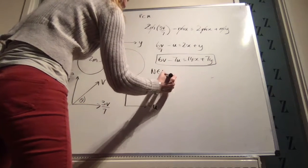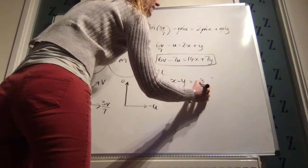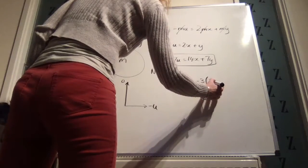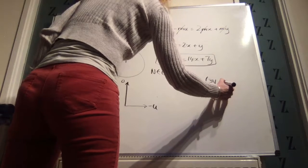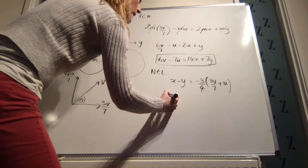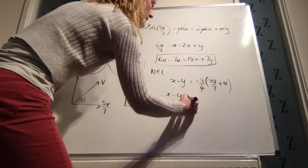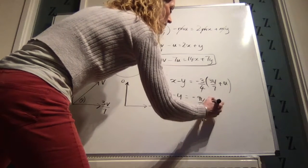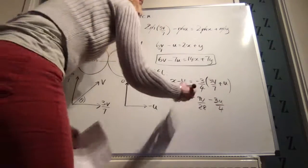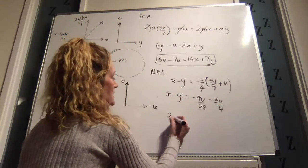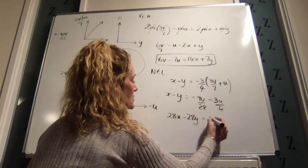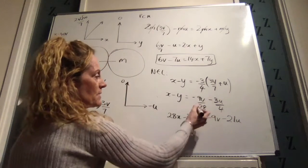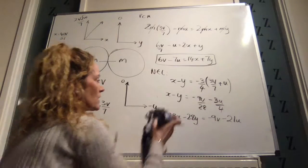Newton's experimental law: x minus y is equal to minus e, and e we're given as being 3 quarters. x minus y is minus e times 3v over 7 minus minus u, which is plus u. That gives you x minus y is equal to minus 9v over 28 minus 3u over 4. Multiply across by 28, and we get 28x minus 28y is equal to minus 9v minus 21u. That's our second equation.